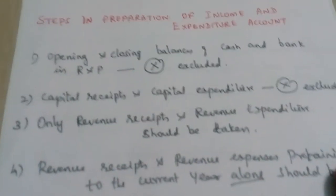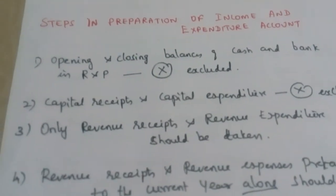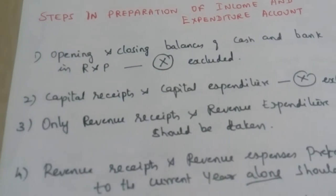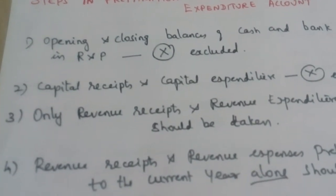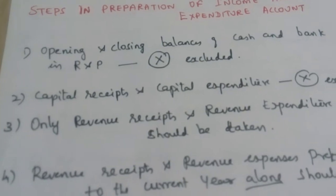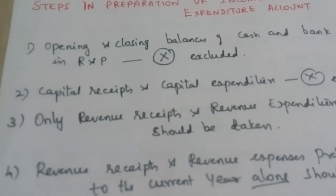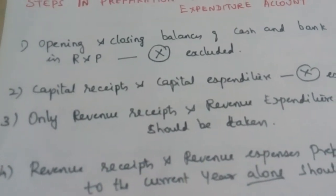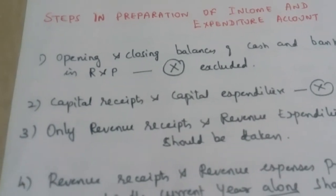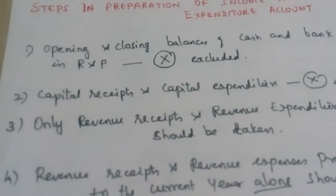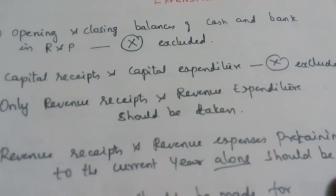Now we are going to see the steps in preparation of income and expenditure account. This is like a profit and loss account — the debit side will be expenses and the credit side will be income. For preparing the income and expenditure, the opening and the closing balance of the cash and the bank should be excluded, as those appear in the receipts and payment account. Also, capital receipts and capital expenditure should be excluded.